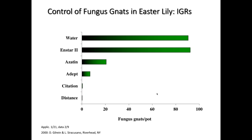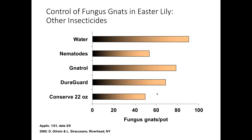In another trial we looked at beneficial nematodes, Naturalis (a Bt product), Duraguard, an older organophosphate insecticide, and Conserve at a very high rate. Nematodes and Conserve gave pretty good moderate suppression — not great, but some control. When using nematodes or Naturalis, you'll need repeat applications — one application is usually not going to do it. I know of growers using nematodes regularly who feel they're getting very good results for fungus gnat control.